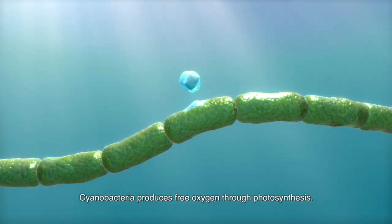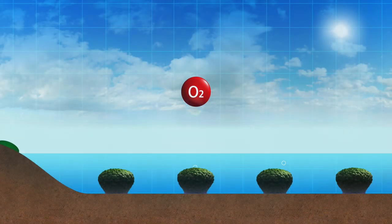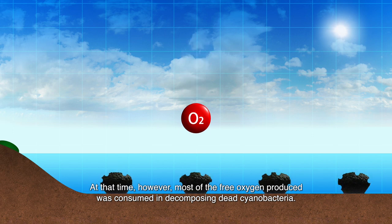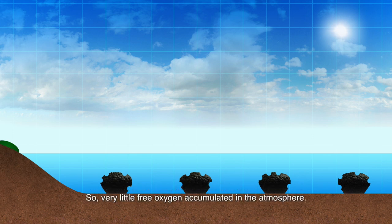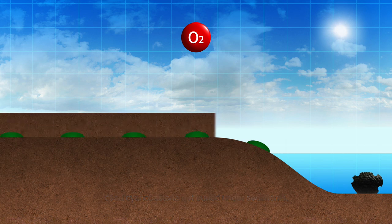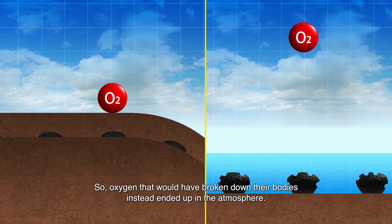Cyanobacteria produces free oxygen through photosynthesis. At that time, however, most of the free oxygen produced was consumed in decomposing dead cyanobacteria, so very little free oxygen accumulated in the atmosphere. On land, however, dead cyanobacteria got buried under sediments, so oxygen that would have broken down their bodies instead ended up in the atmosphere.